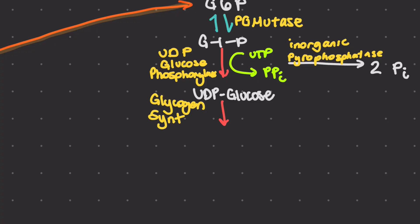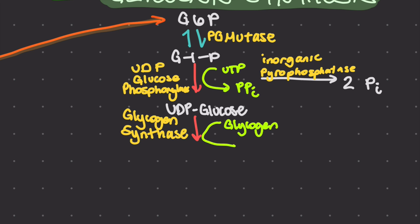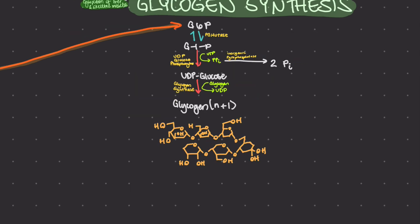Then, branching enzyme creates alpha-1,6 glycosidic linkages for the branch points in the glycogen molecules. The creation of these branches increases the solubility and availability of glucose in the glycogen molecule, which is crucial for rapid glucose release in energy demands.